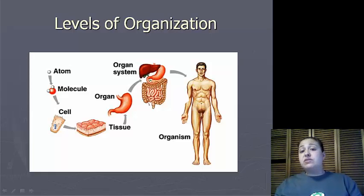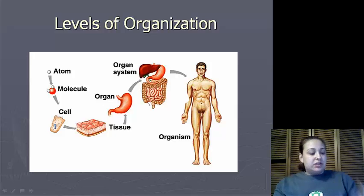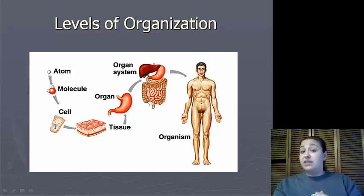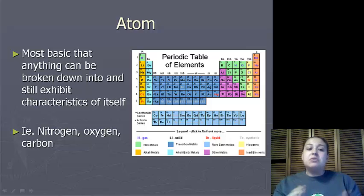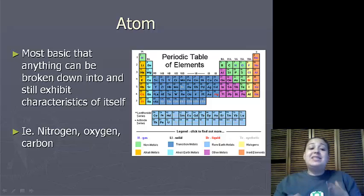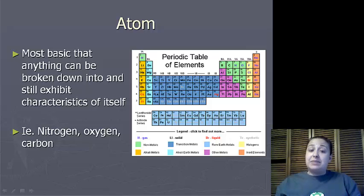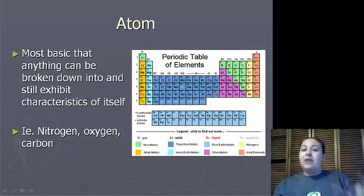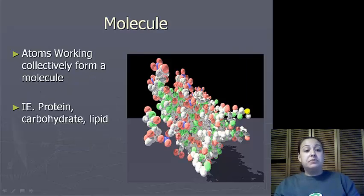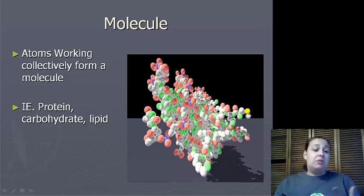When looking at the levels of organization, we start from the smallest and work our way up. Each level combines together to form the next level up. The atom is the most basic unit that anything can be broken down to and still exhibit its own characteristics — we know these as the elements. Atoms come together to form molecules, such as proteins, carbohydrates, and lipids.